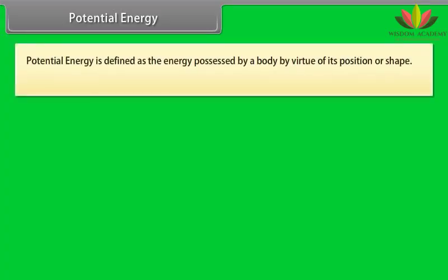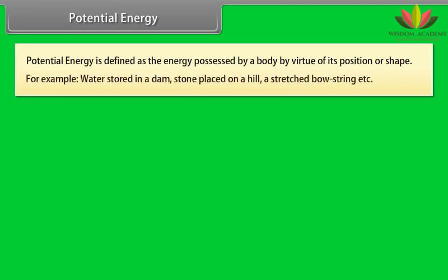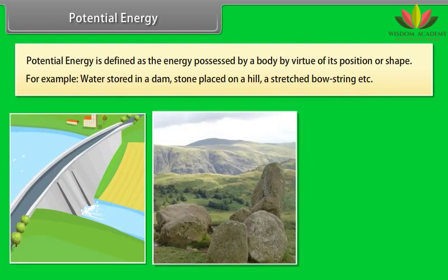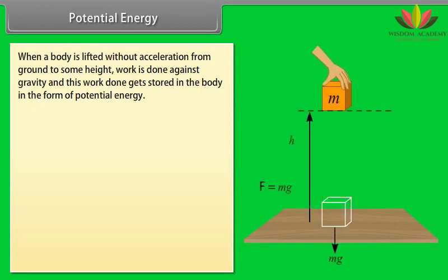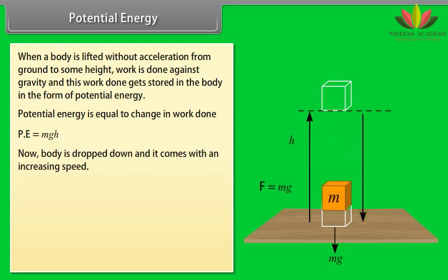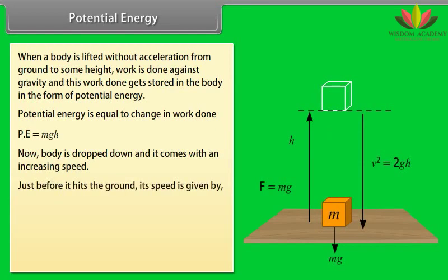Potential energy. Potential energy is defined as the energy possessed by a body by virtue of its position or shape. For example, water stored in a dam, stone placed on a hill, a stretched bow string. When a body is lifted without acceleration from ground to some height, work is done against gravity, and this work done gets stored in the body in the form of potential energy. Potential energy is equal to change in work done. So potential energy is equal to mgh. Now body is dropped down and it comes with an increasing speed. Just before it hits the ground, its speed is given by V square is equal to 2gh. This equation can be written as half mv square equals to mgh.